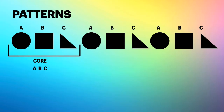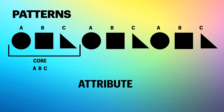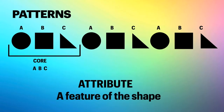The other word I want to talk about is the word 'attribute.' In this pattern, when I take a look at the attributes — which are really the different features of the shapes — I can see that they're all black, so color isn't changing here. Every shape is about the same size, so size isn't changing either. It's really the shapes themselves that are changing. An attribute means a feature of a shape, so the question is: what attribute is changing?